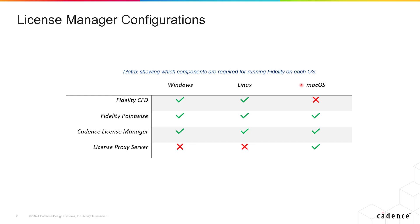Things get a little bit different if you're using a Mac computer. Fidelity CFD cannot be installed on a Mac. Fidelity Pointwise can be installed on a Mac. However, the Cadence License Manager and the License Proxy Server — even though you need them to run Fidelity Pointwise on a Mac — cannot themselves be installed on a Mac. The Cadence License Manager can be installed on a Windows or Linux system, and the License Proxy Server can only be installed on a Linux operating system.